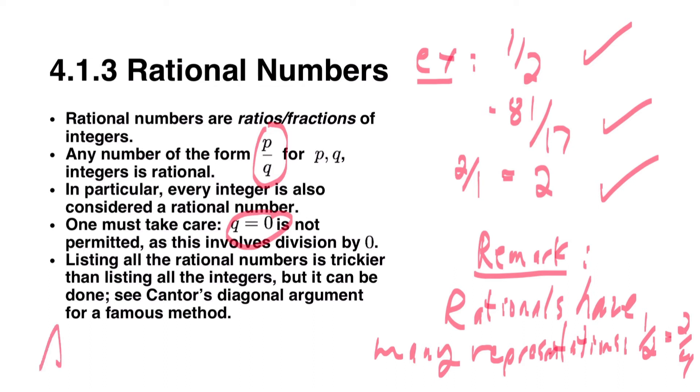I'll put this as a star item here. P over zero is not defined. There are serious mathematical issues with dividing by zero, so we disallow it.